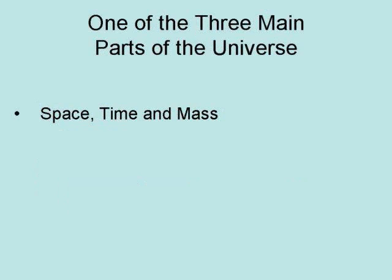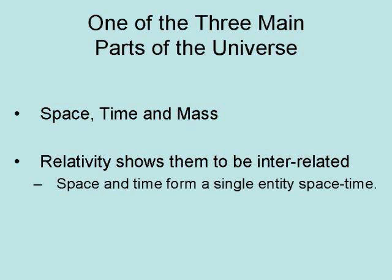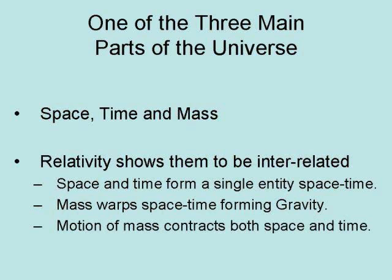Time is one of the three main parts of the universe: space, time, and mass. Relativity shows that they are interrelated. Space and time form a single entity called space-time. Mass warps space-time, forming gravity. And the motion of mass contracts both space and time.